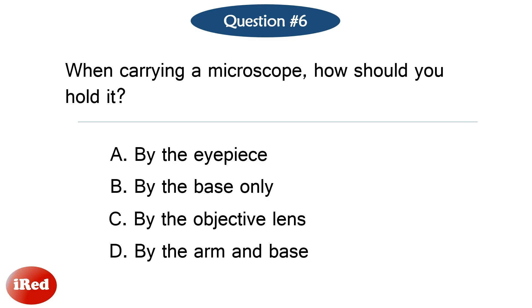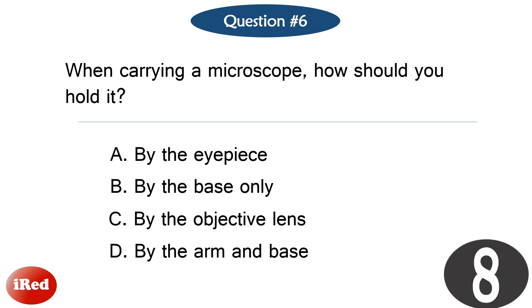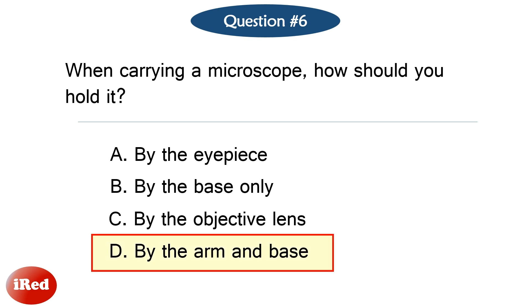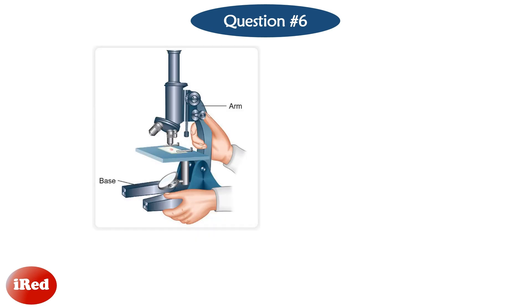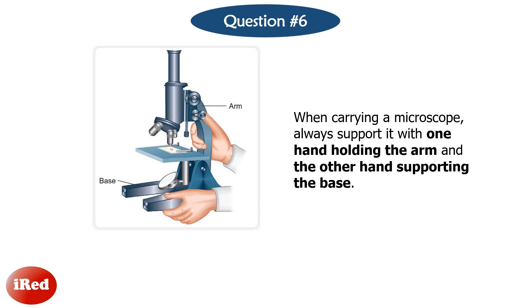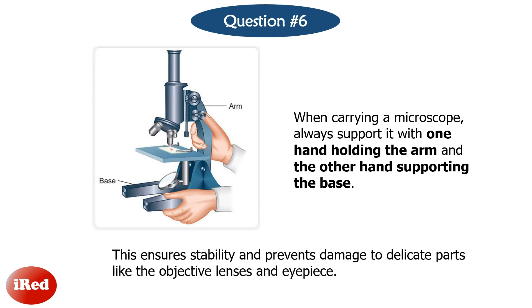Question number 6: When carrying a microscope, how should you hold it? The correct answer is letter D, the arm and base. When carrying a microscope, always support it with one hand holding the arm and the other hand supporting the base. This ensures stability and prevents damage to delicate parts like the objective lenses and eyepiece.